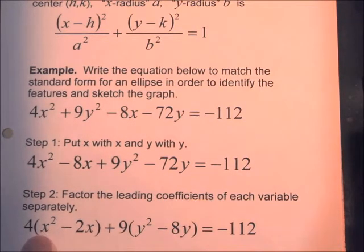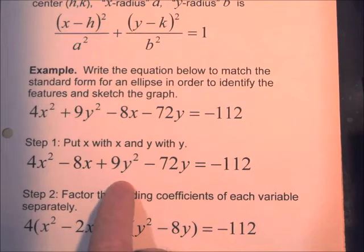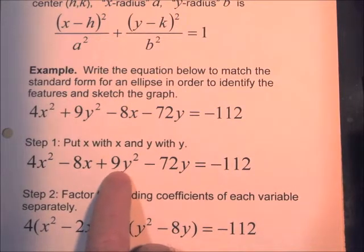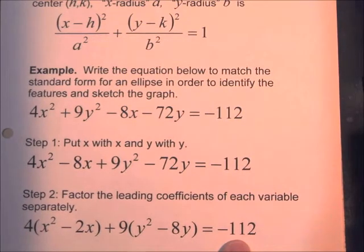Next, we want to factor out the leading coefficients of the x and y terms. We factor out 4 from the x terms, leaving x squared minus 2x inside. Then we factor out 9 from the y terms, leaving y squared minus 8y inside. The equation still equals negative 112.